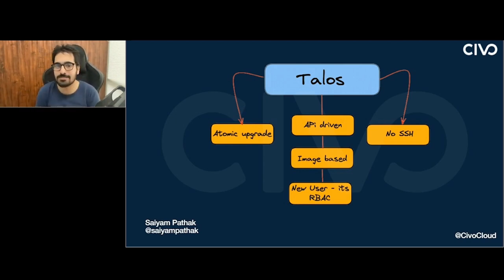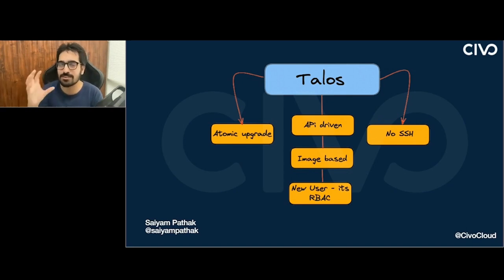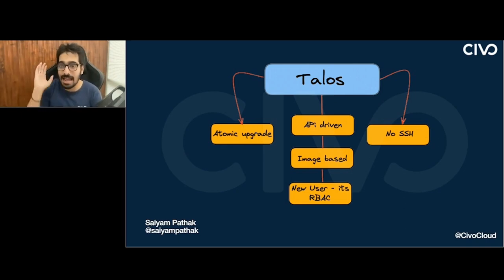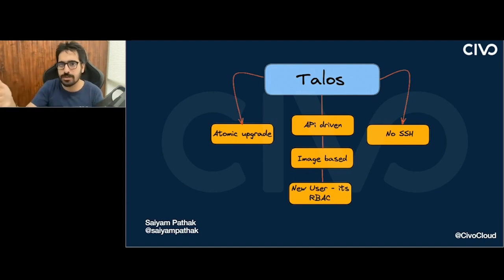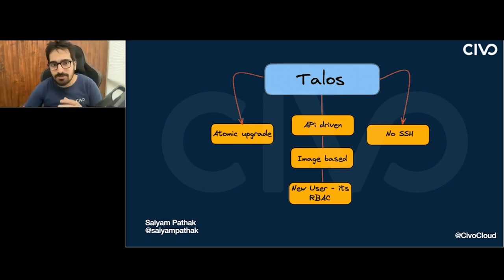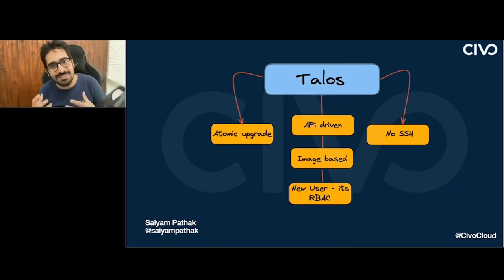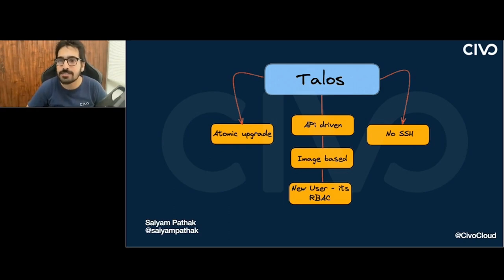There is no SSH on Talos OS. You cannot SSH into a Talos machine because in the end, you just want a Kubernetes cluster, Kubernetes node, Kubernetes machine — and you should not be able to SSH to it. It should just have the required components to run Kubernetes, and do basic things via the API. Talos is image-based: the same images run exactly the same on all cloud vendors, on Raspberry Pis, any boards — you run the same configuration file and get a Kubernetes cluster.